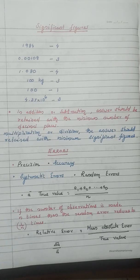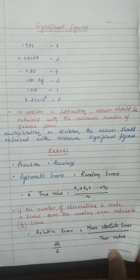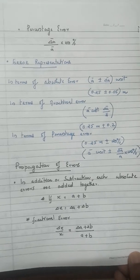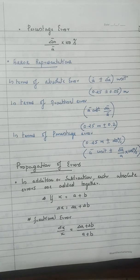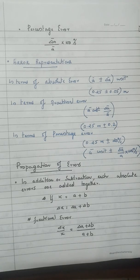You should know what is meant by true value, mean absolute error, relative error, and percentage error. Errors can be represented in terms of absolute error as ā ± Δā. In fractional error representation, for example 0.25 m ± 0.2, the 0.2 has no unit, indicating fractional error (Δā/ā). If expressed as 20%, the percentage symbol indicates percentage error.